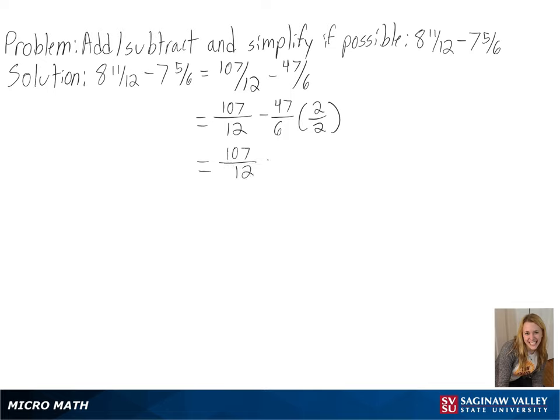In multiplying these out, we get 107 over 12 minus 94 over 12, and we get 13 over 12.